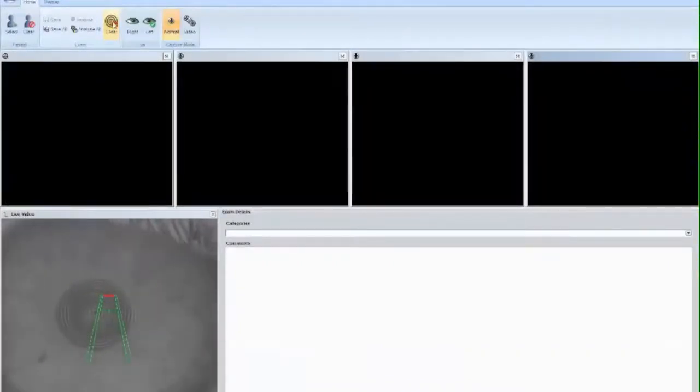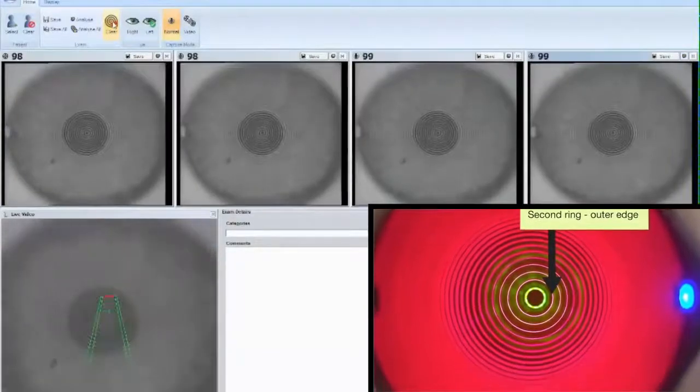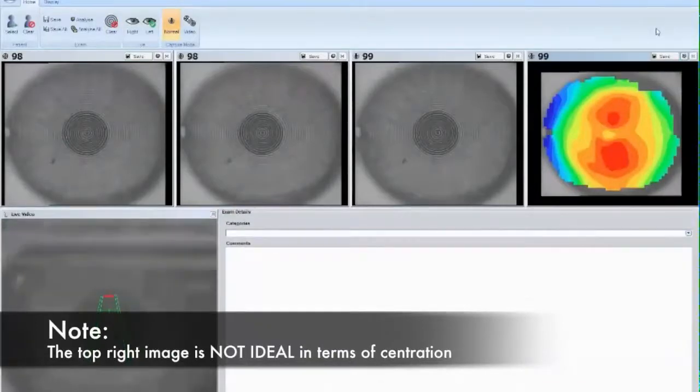We need to ask the patient to look at the outer edge of the second ring. In this example, we are getting close to centration, but we are still not there.